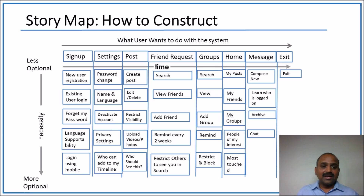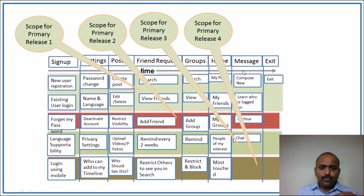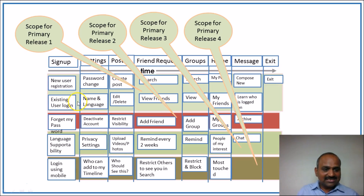After the story map is built, we figure out the scope for the first release. The backbone for the first release is: sign up, settings, post, friend request, groups, home, message, exit. The walking skeleton — the minimum features to fulfill those backbone items — appears in the top green bar: new user registration, existing user login, password change, name and language, create post, edit/delete, search, view friends. That ribbon represents the scope of the first release.